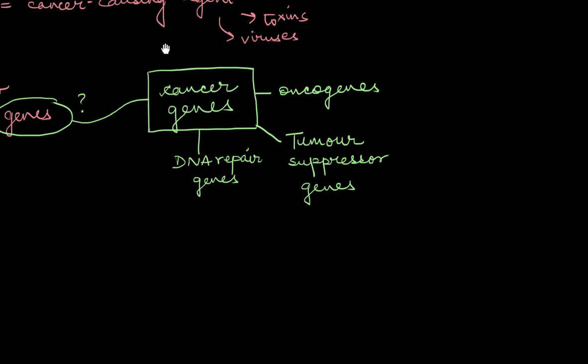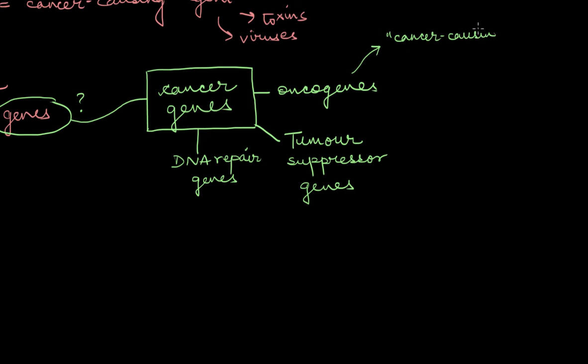Oncogenes literally mean cancer-causing genes, and we have a dormant version of these genes inside of us called the proto-oncogenes. Now these proto-oncogenes, they regulate cell growth and division.